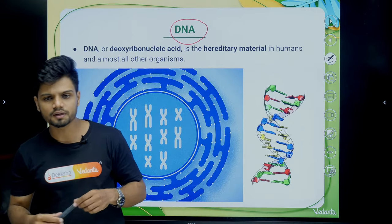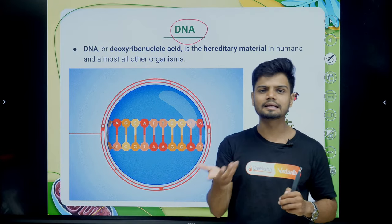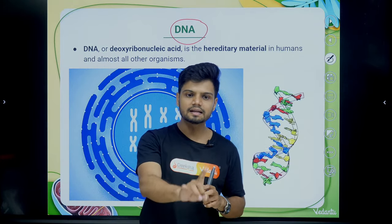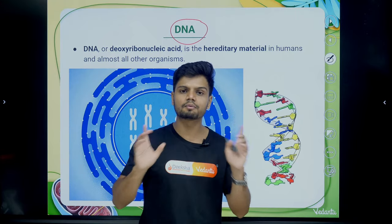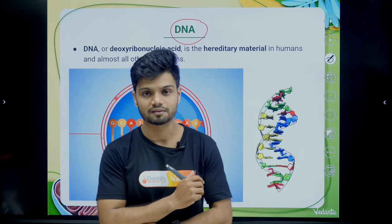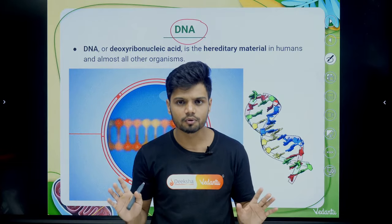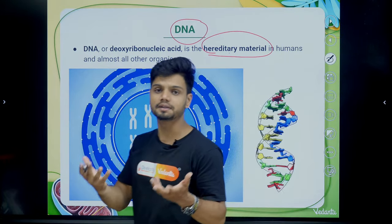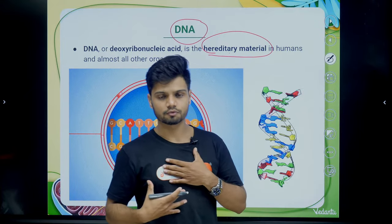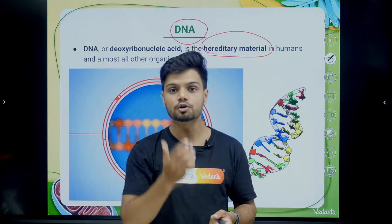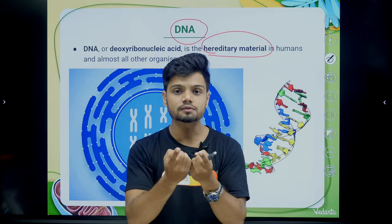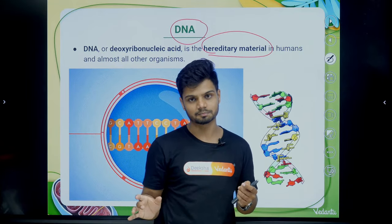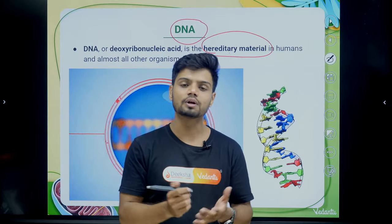What is DNA? For class 10, I will give you a basic definition. DNA stands for deoxyribonucleic acid, but when someone asks what DNA is, you should say: DNA is the genetic material, also called the hereditary material — the blueprint of how your body is formed. You might have two hands, one nose, two eyes, two ears — all of this is because of the blueprint inside your body, which is nothing but DNA.